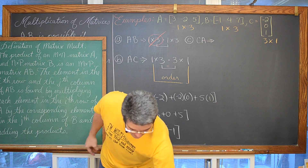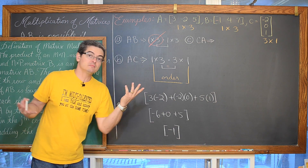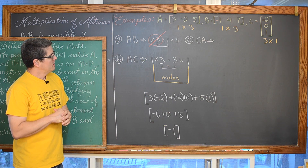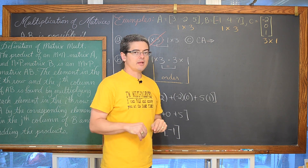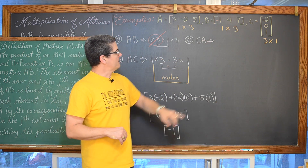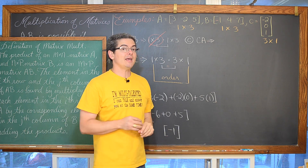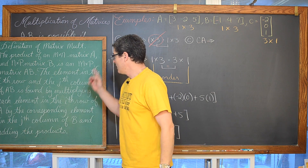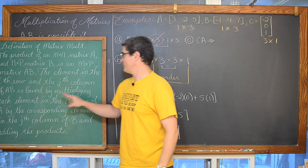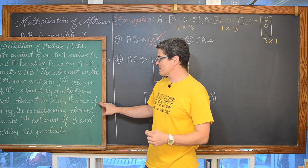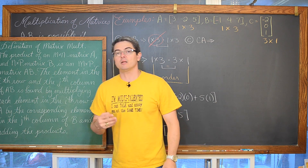The product of matrix A times matrix C is simply negative 1. Now we are going to take matrix C and multiply it by A — putting C as the first matrix and A as the second. We find this product by multiplying each element in the row of the first matrix by the corresponding elements in the column of the second matrix and adding up all those products.